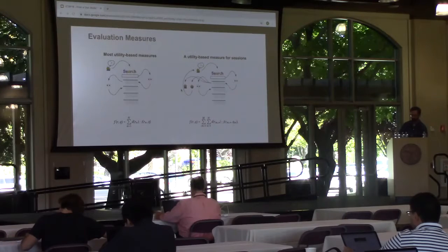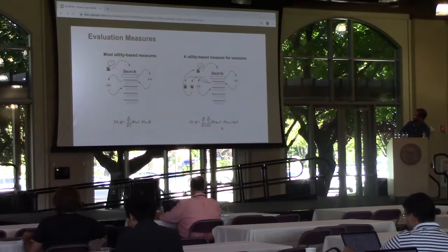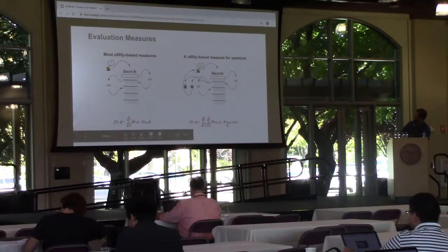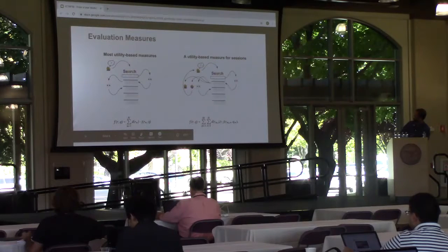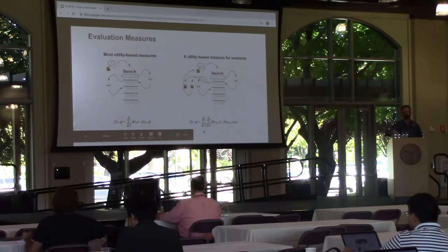Our session RBP measure takes the user model I described and applies the same RBP-style approach, but it's a bigger model with more decisions — you can go from query to query. Essentially, you have the relevance judgment of the document at position N in query M, summed over discounts now defined in terms of query position and rank position in the session, summing over the entire session — over all queries and all the rank lists of those queries.